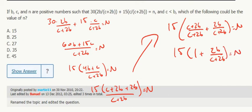So it's 15 times 1 plus 2b over c plus 2b. So 15 times 1 is 15 plus 2b over c plus 2b.